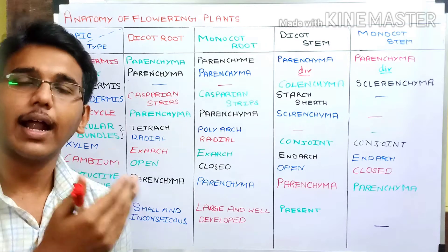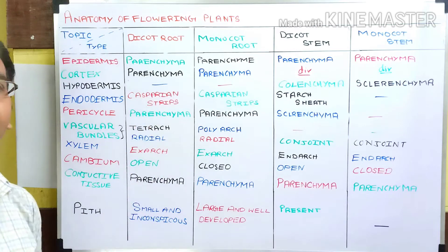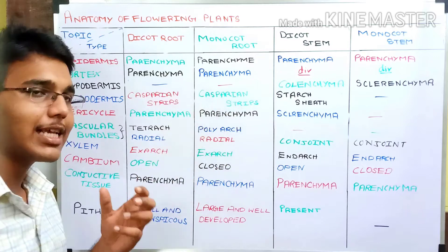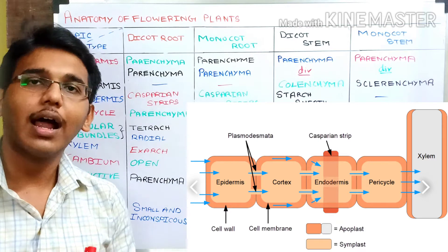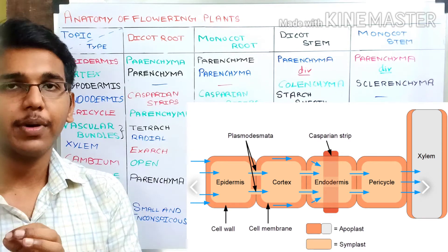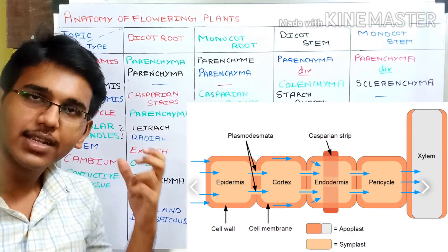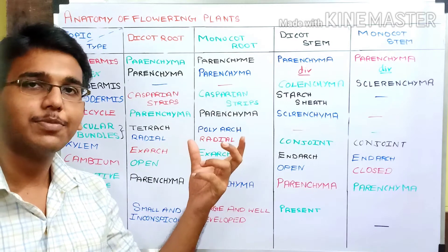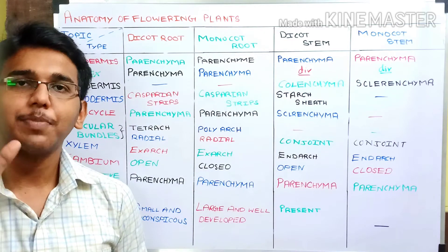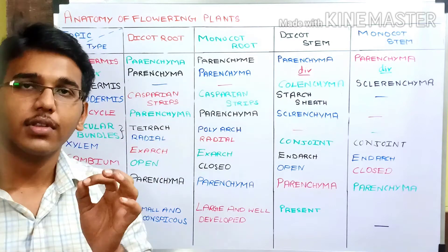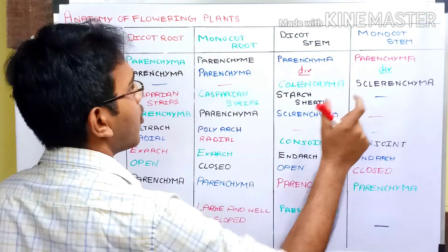The endodermis is the innermost part of the cortex. In roots, the endodermis consists of Casparian strips — parenchymatous tissues in which the tangential and radial walls are thickened by deposition of suberin, preventing backflow of water and air absorbed by the roots. In stem, Casparian strips are absent and a starch sheet is present in dicot stem — storage parenchymatous tissues in the endodermis that store starch. In monocot stem, the endodermis is not distinguished.